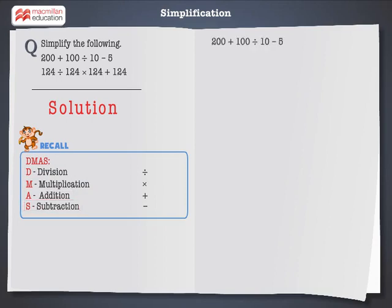Let us now solve the first problem: 200 plus 100 divided by 10 minus 5. Dividing 100 by 10, we obtain 10. There is no multiplication operation. Therefore, we do addition: 200 plus 10 is equal to 210. Now subtraction: 210 minus 5 is equal to 205. Hence, 205 is the final answer.